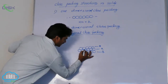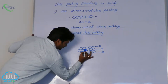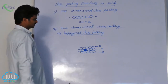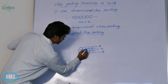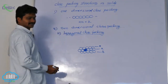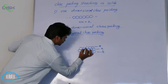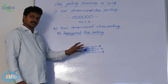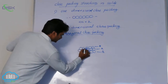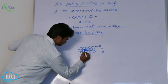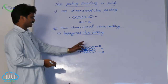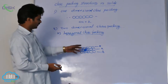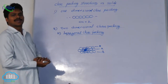With this arrangement, consider any sphere. It is in contact with six spheres — first, second, third, fourth, fifth, sixth. So here each sphere is in contact with six spheres. If the centers of these nearest spheres are joined, they will form a hexagon. That is why the name hexagonal close packing is given.